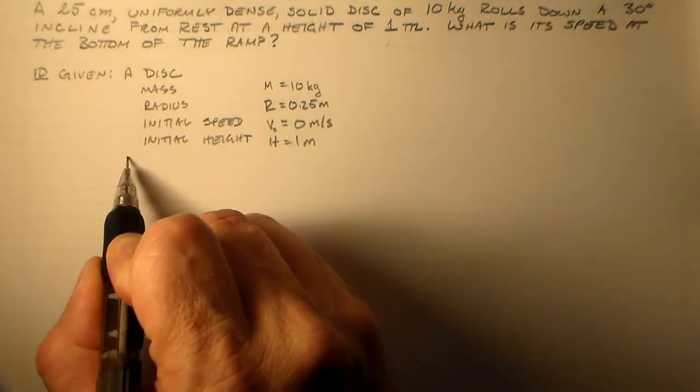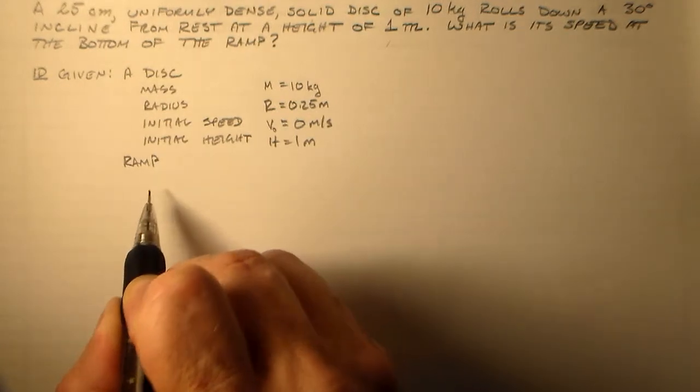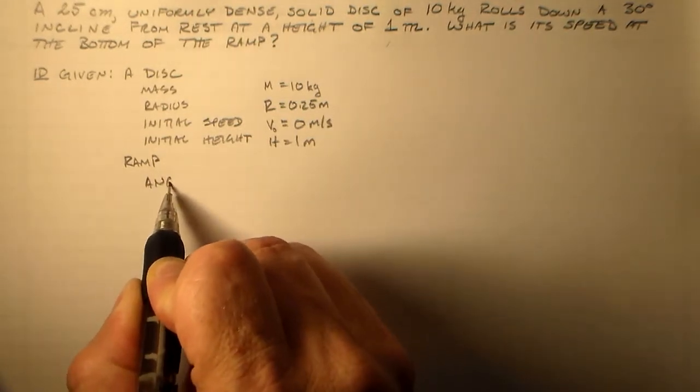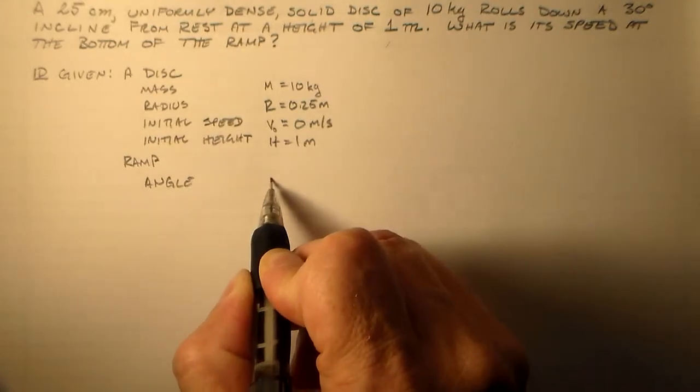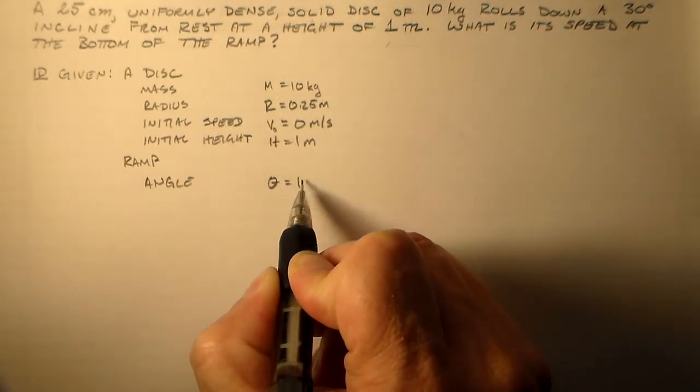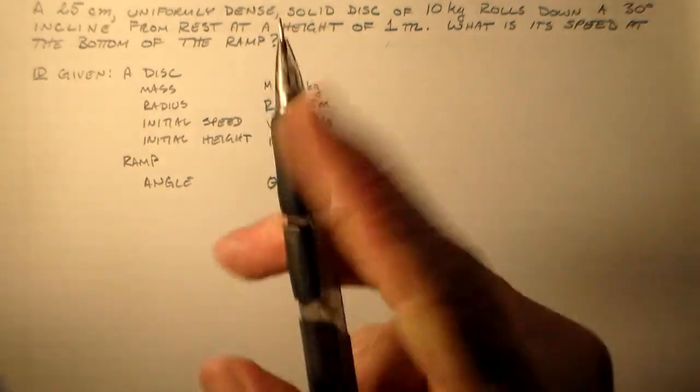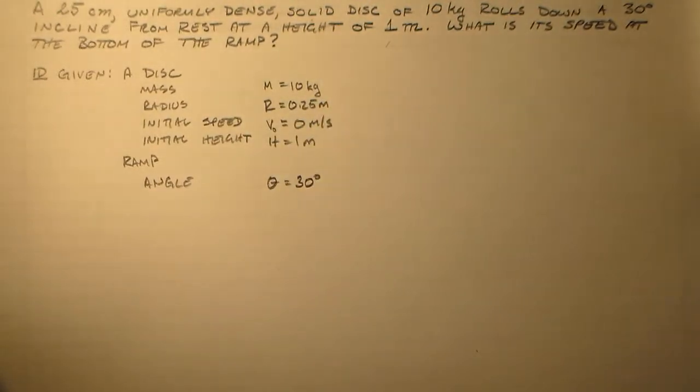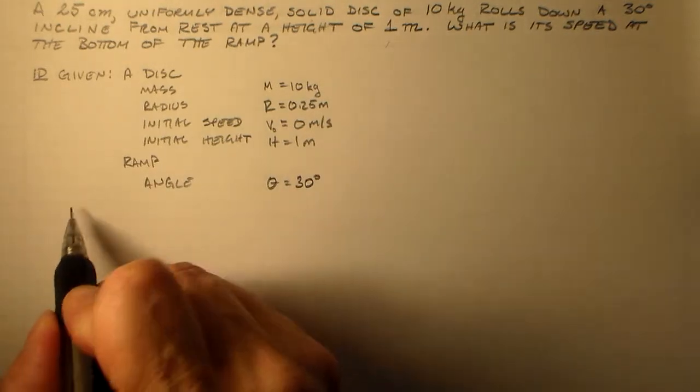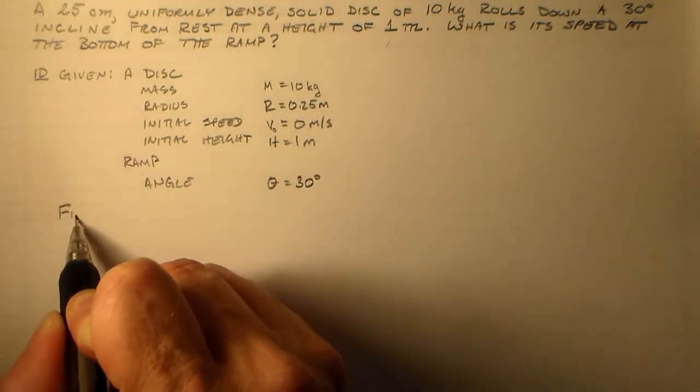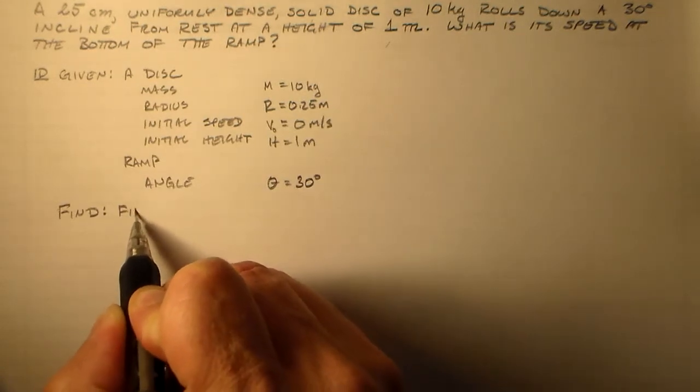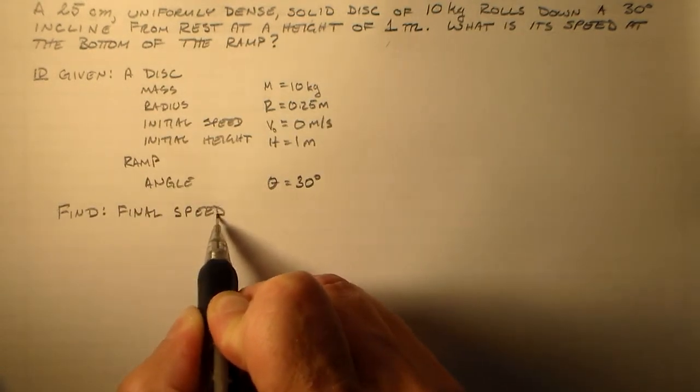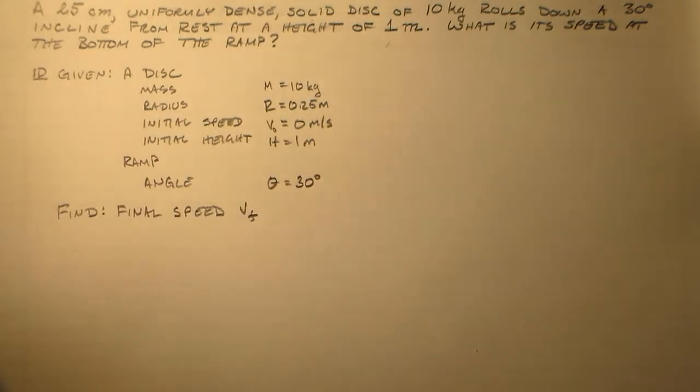On top of that, we have the ramp. And all we know about the ramp really is the inclined angle. And that angle is theta is equal to 30 degrees. So fairly simple and straightforward. Let's go ahead and find the final speed. And we can call that whatever we want. VF sounds good to me.